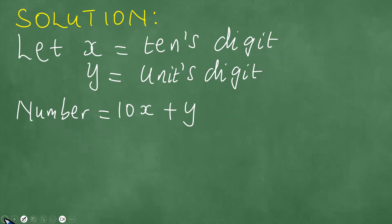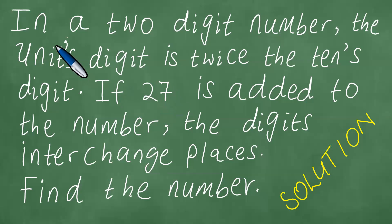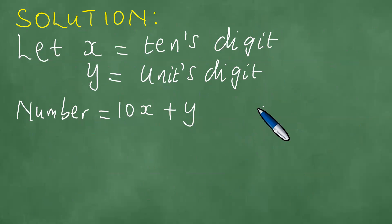But there's more that the question says. It says the units digit is twice the tens digit, so this number here is going to be 10x plus 2x. If you substitute y equals 2x, so if there's y, you put 2x.